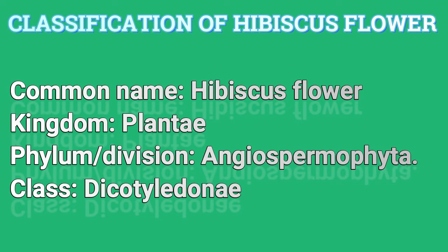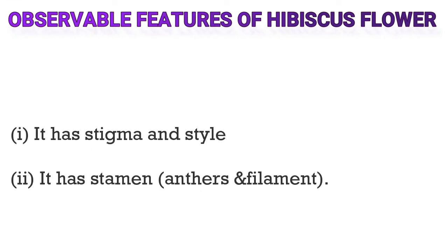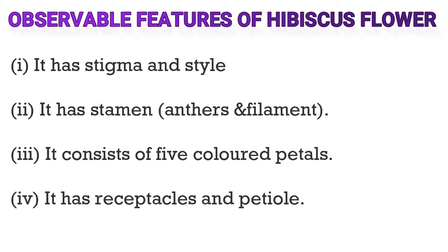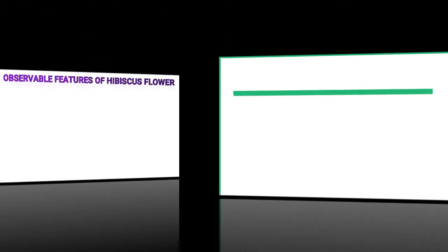Observable features of hibiscus flower: one, it has stigma and style; two, it has stamen, anthers, and filament; three, it consists of five colored petals; four, it has receptacles and petiole. Also look at the parts of hibiscus flower and their function.